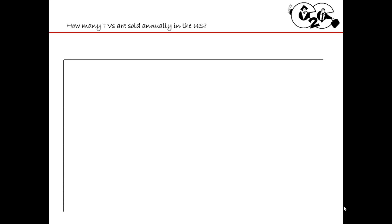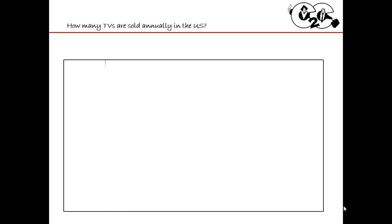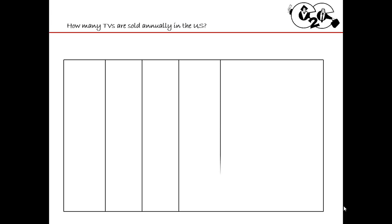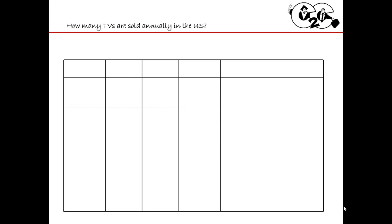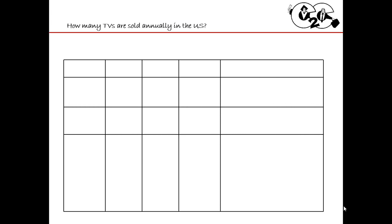Let's say you get this question: How many TVs are sold annually in the U.S.? The first thing I'm going to do is draw my market sizing table. I'm going to put in some necessary fields or columns that I know I'm going to need, and then put in the different rows for categories and groupings.